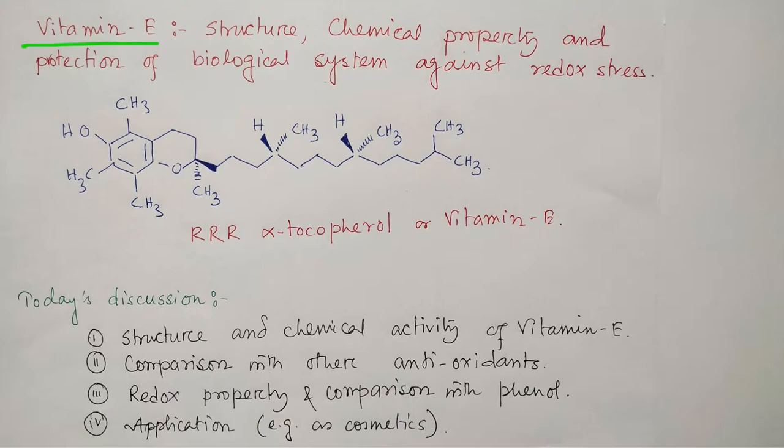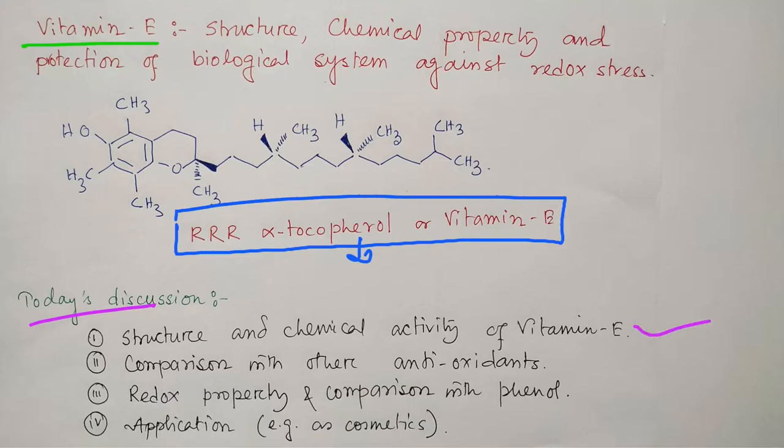This molecule, if you look at this, is Vitamin E. It's scientifically called RRR-α-tocopherol or Vitamin E. This is actually an alcohol derivative - actually a phenol with a phenolic OH group. It's a fat-soluble vitamin. Today's discussion will cover mainly the structure and chemical properties of Vitamin E, comparison with other antioxidants, redox properties and comparison with phenol, and its application in cosmetics.